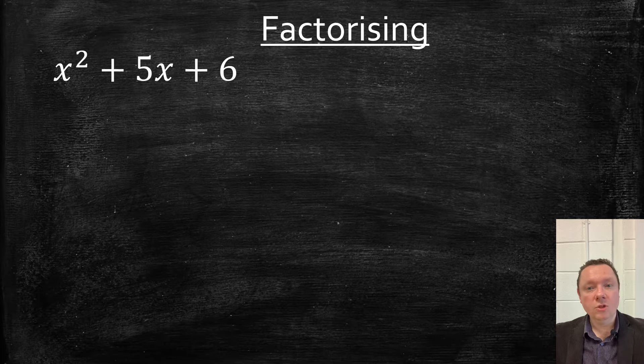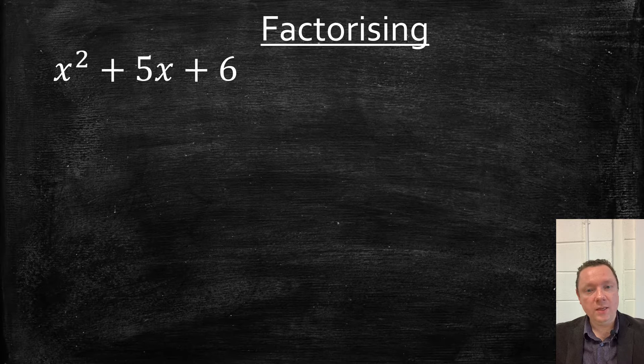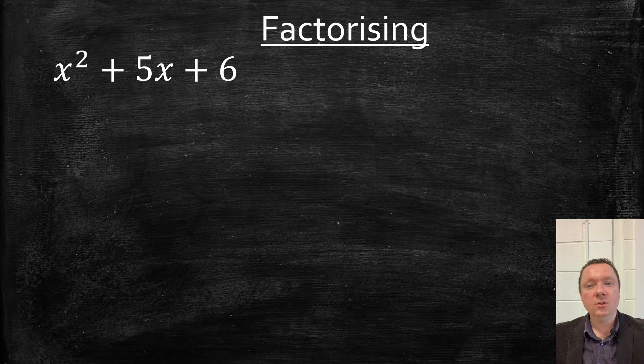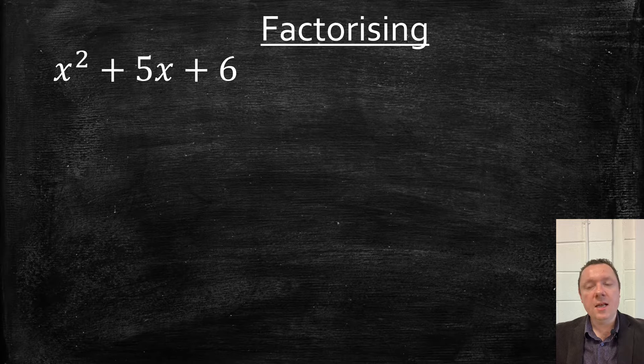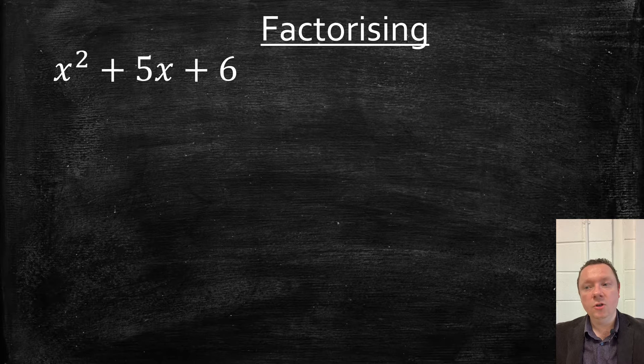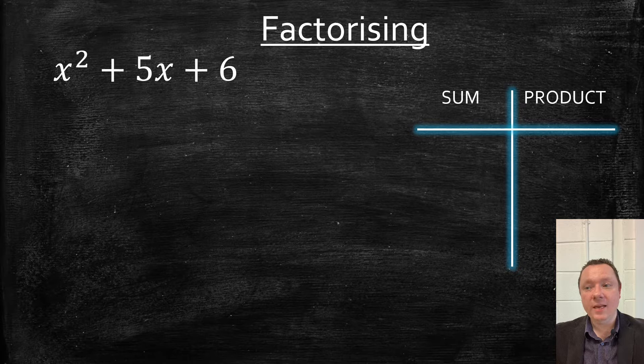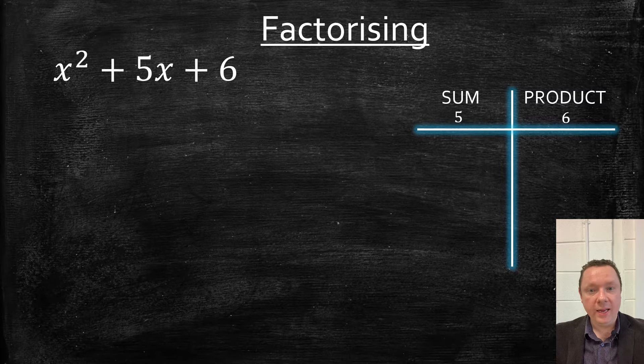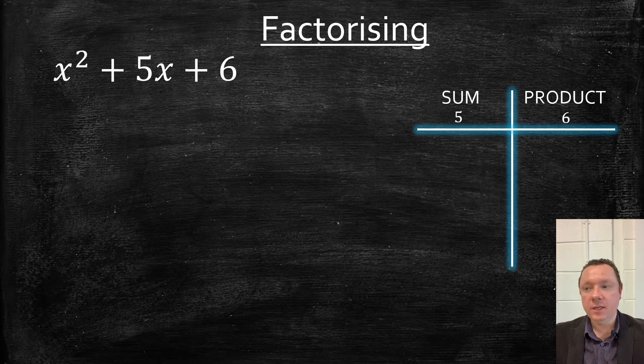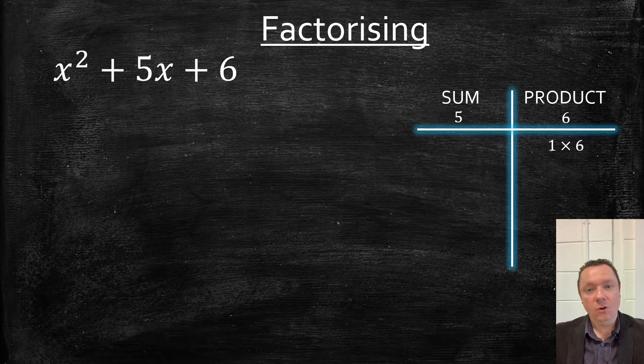A trinomial. A trinomial means there's three things: an x squared, an x, and a number. So we're going to factorize a simple one, x squared plus 5x plus 6. So basically, we're looking for two numbers that add to make 5, but times to make 6. So looking at our times in, I could have 1 times 6, or minus 1 times minus 6 as well.